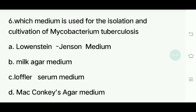Sixth question. Which medium is used for the isolation and cultivation of Mycobacterium tuberculosis? Options: Lowenstein-Jensen medium, Milk agar medium, Loeffler serum medium, MacConkey agar medium. Answer is Lowenstein-Jensen medium.